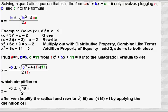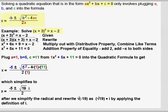The final method we're going to look at is using the quadratic formula. This is probably the easiest method because it just involves plugging coefficients into the formula: x equals negative b plus or minus the square root of b squared minus 4ac, all over 2a. However, you first have to have your equation in the form ax² + bx + c = 0. Here our equation is (x + 3)² = x + 2, so we have to do some work first. We multiply out the left side using the distributive property, getting x² + 6x + 9 = x + 2, then subtract x from both sides and add 2 to both sides, giving us x² + 5x + 11 = 0.